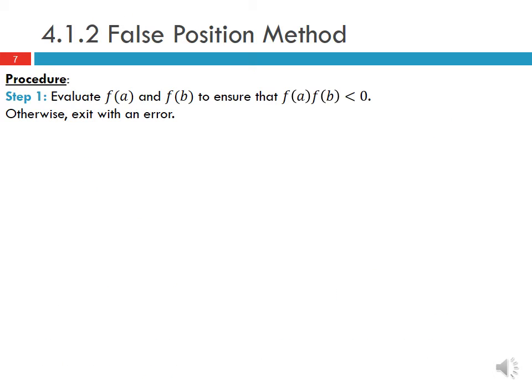The procedure for the false position method is exactly the same as the bisection method except in Step 2 where the calculation of the next estimate is different. In Step 1, we evaluate f(a) and f(b) to ensure that f(a) times f(b) is less than zero, otherwise we exit with an error. This essentially checks that we are bracketing one root. Next we calculate the value of the root in iteration i using our false position algorithm.